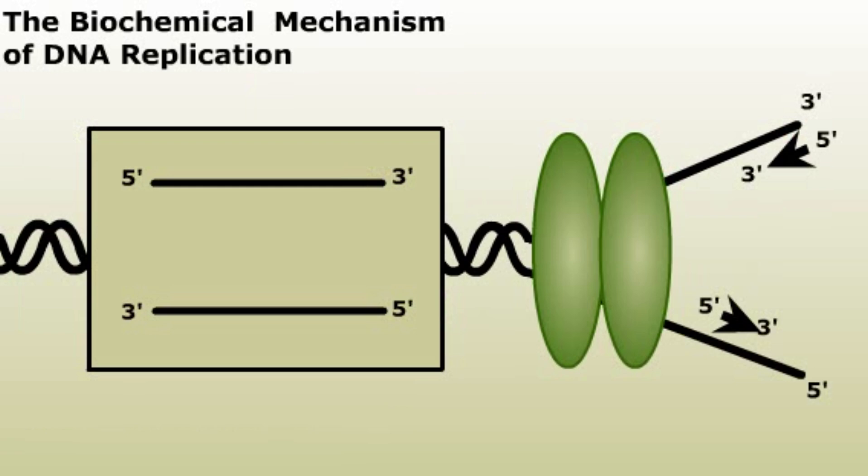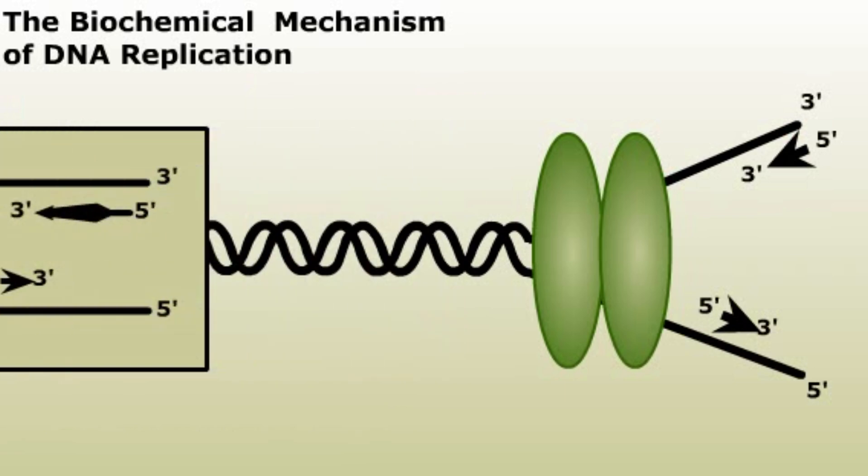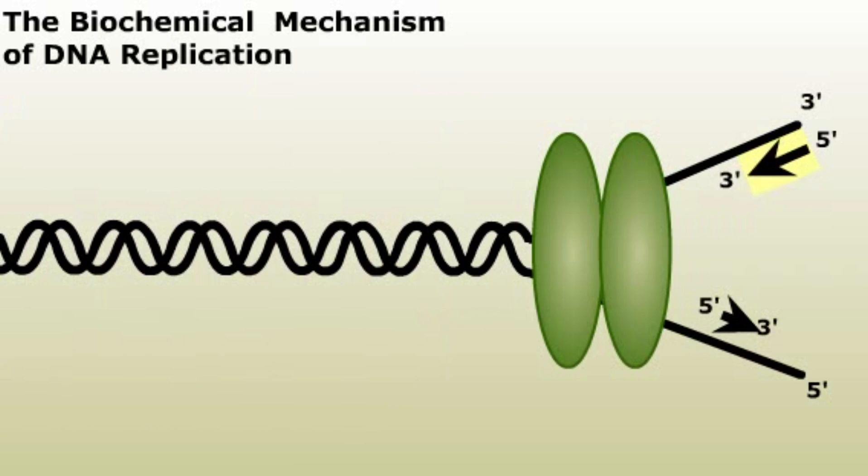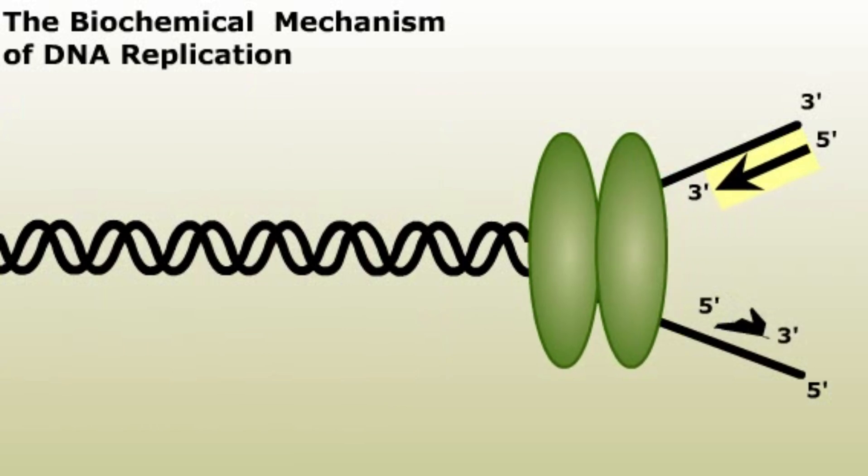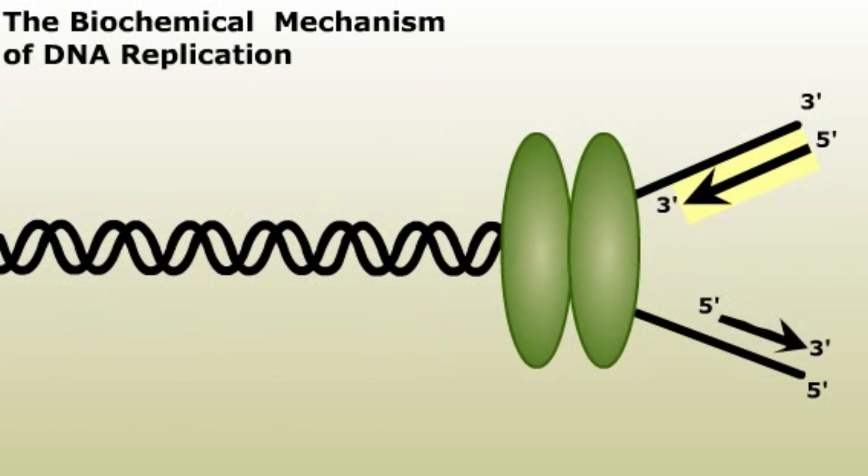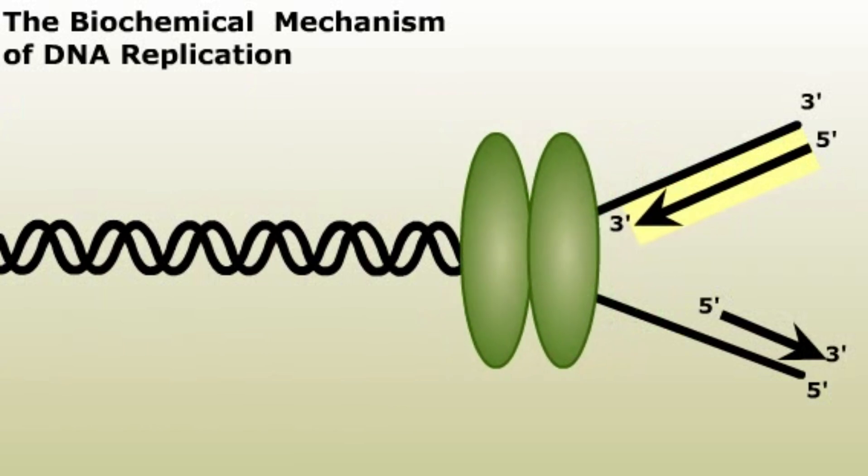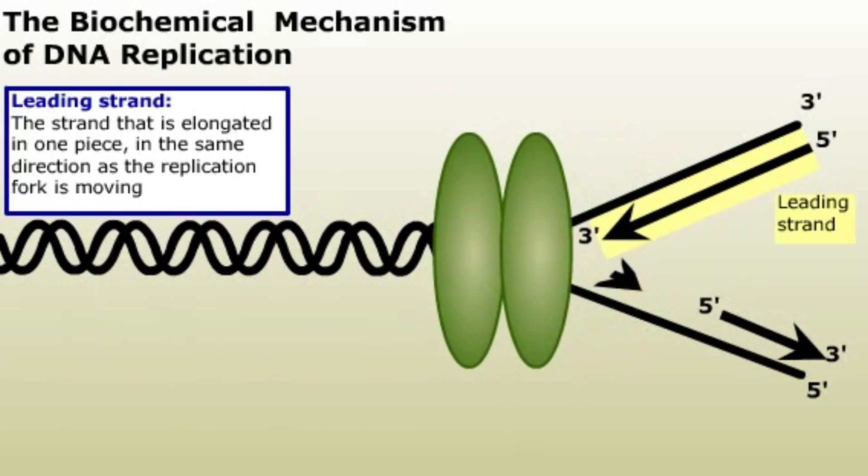The new strand of DNA is elongated 5' to 3'. The fact that DNA strands run in opposite directions presents a problem at the replication fork. As the DNA is unwound, one strand can be elongated in a single piece in the same direction as the replication fork is moving. This is called the leading strand.